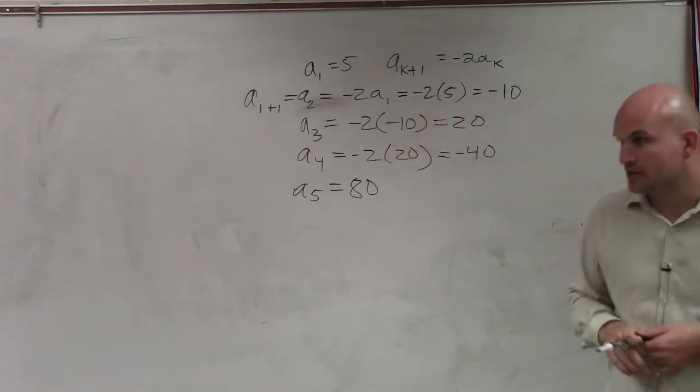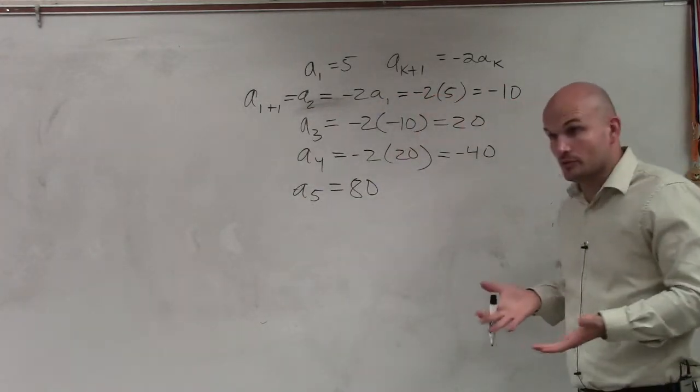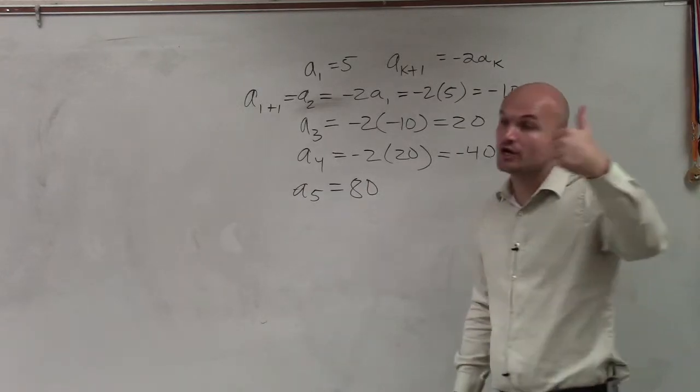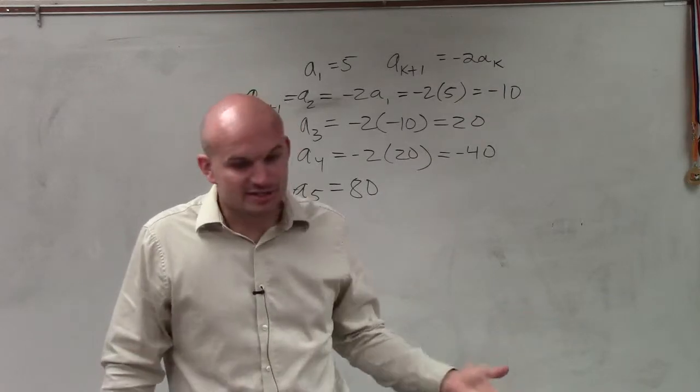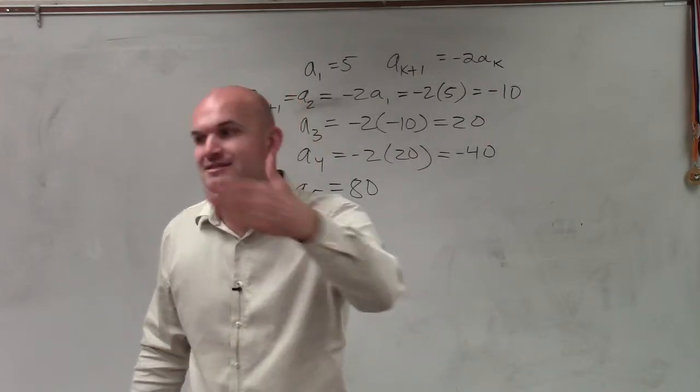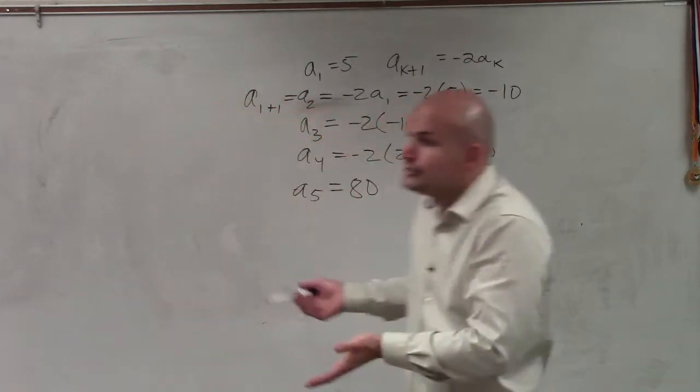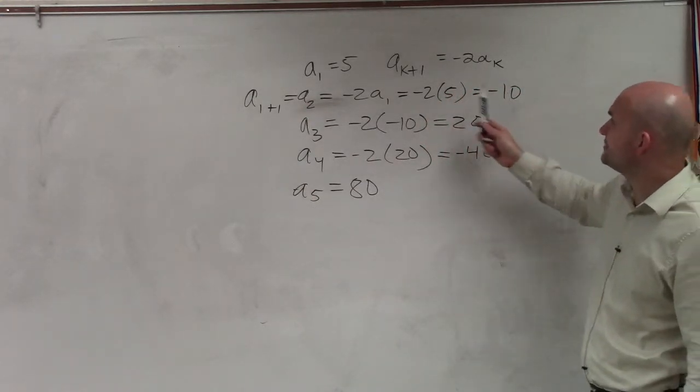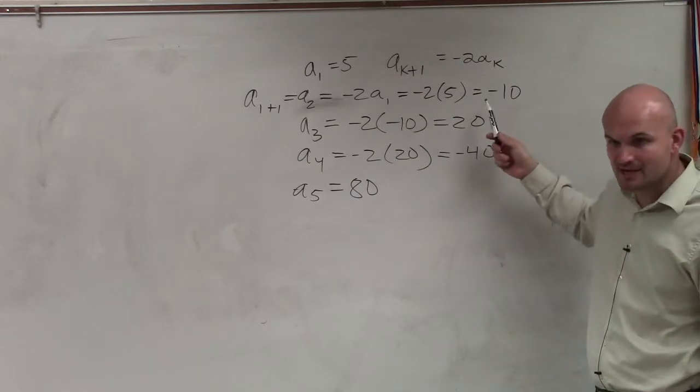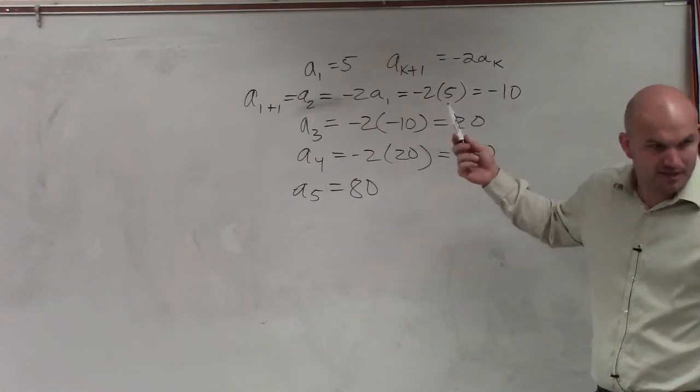Then it says to determine the rule. So we could either try to think of the rule, or we have two formulas to find the rule, either an arithmetic formula or a geometric. Hopefully you understand that since this section is on geometric, that's the rule that I want you to follow. And you can also just determine, is the difference from negative 10 to 5 the same as the difference from 20 to negative 10? No. So it's obviously not arithmetic, right?